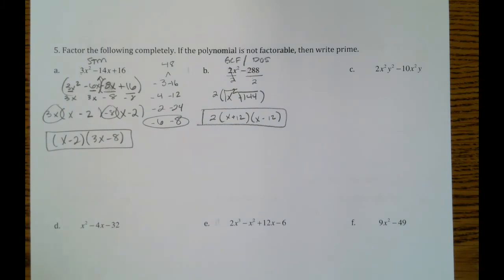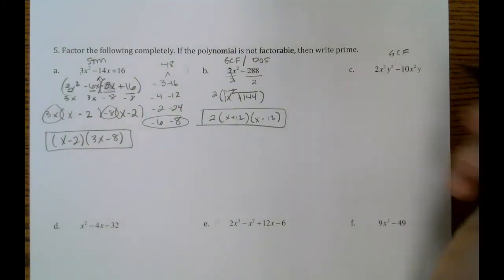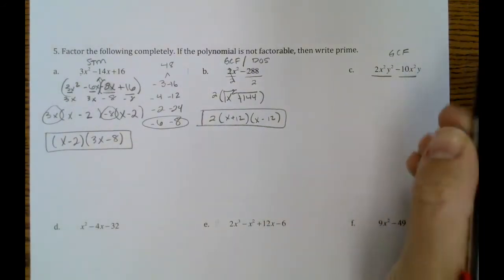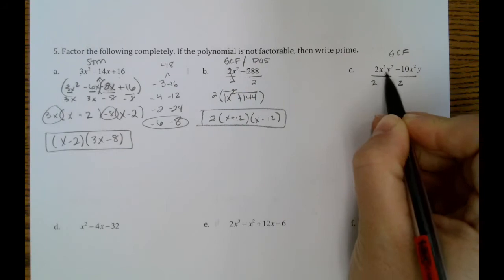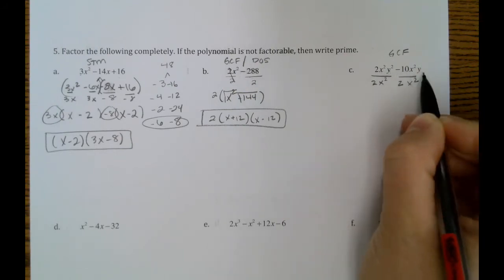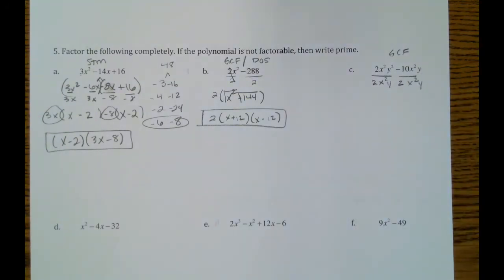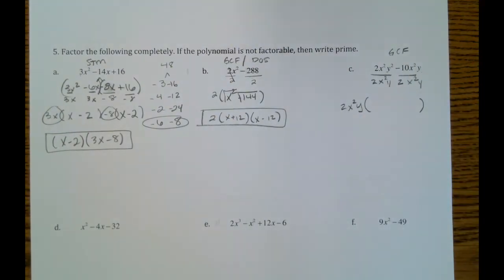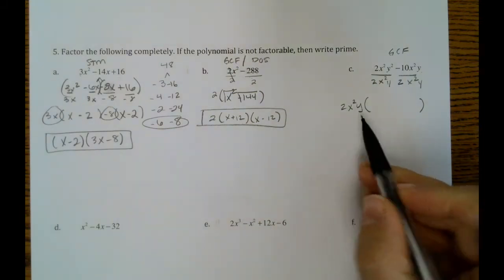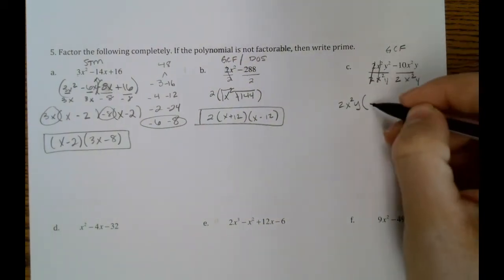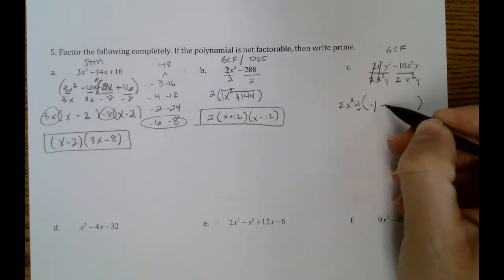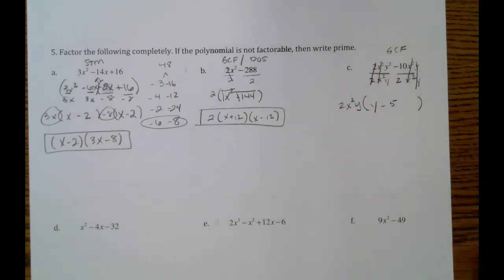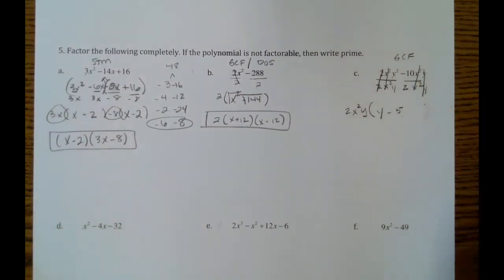Okay. Letter C, we do have subtraction in two terms, but 2 and 10 and all of these variables going on, we can't do difference of squares with that one. But we can definitely do GCF here. So if we look at what we have, we can divide a 2 out. We can also divide an x squared. We have y squared and y, so we can divide out a y to the first as well. Okay. So our GCF goes out front. 2s divide out. x squareds divide out. We're left with y. Negative 10 over 2 is negative 5. x squareds out and ys are out. So we're left with just y minus 5 on the inside.